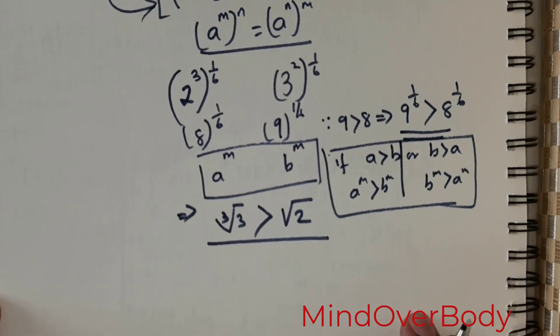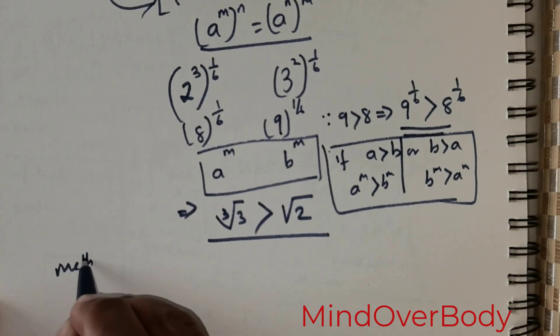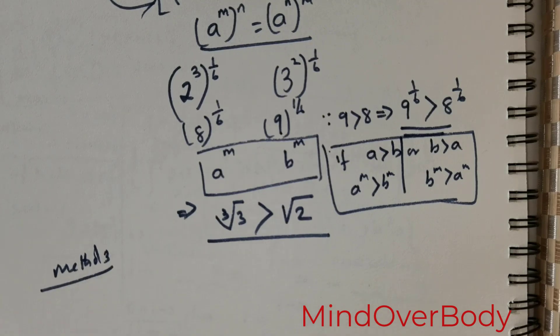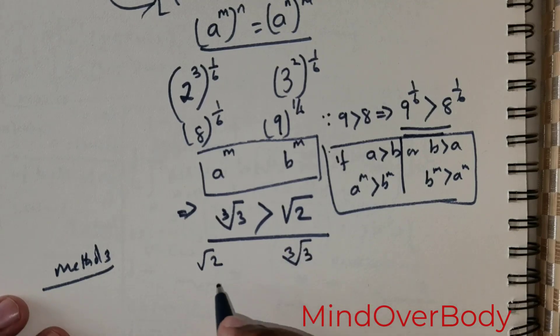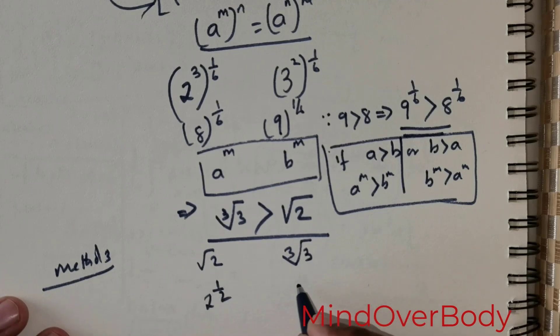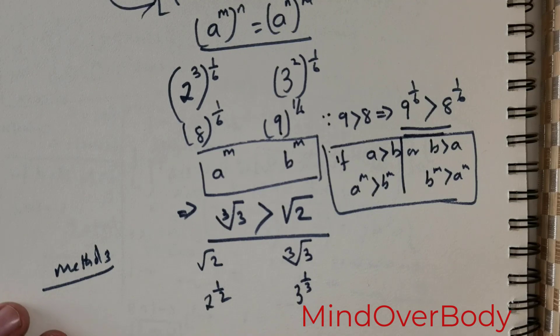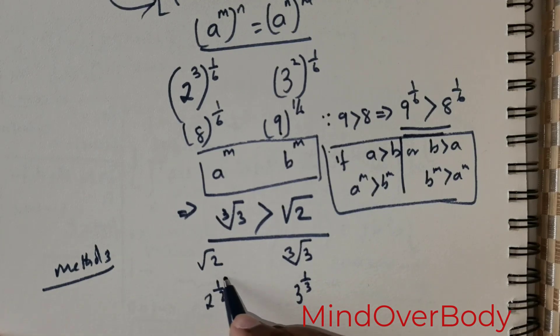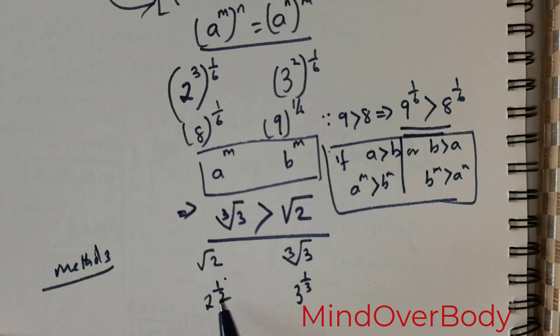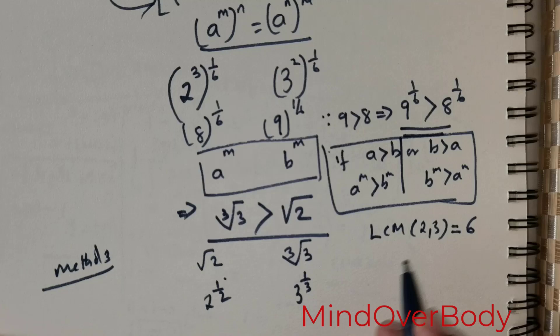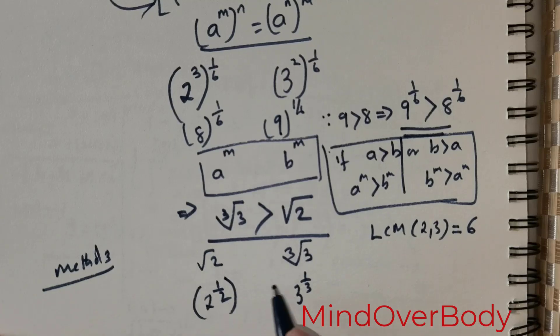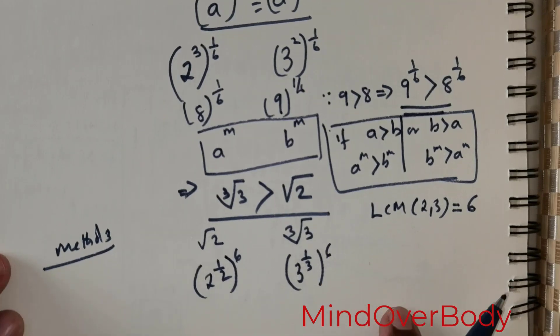Now the third method is also very similar to method 2. So let me place this third method. You got root of 2 and you got third root of 3. Now I'm going to write root of 2 as 2 raised to the power 1 over 2, and I'm going to write third root of 3 as 3 raised to the power 1 over 3. Now pick up a quantity which is such that this quantity 2 divides that quantity and as well as this quantity 3 divides that quantity. So the best way to find that quantity is to find the LCM of 2 and 3. That is going to be 6. Now what you need to do is raise this to the power of 6.